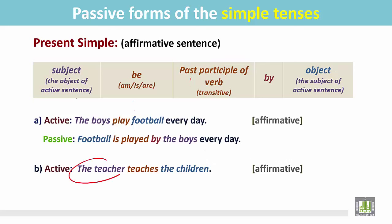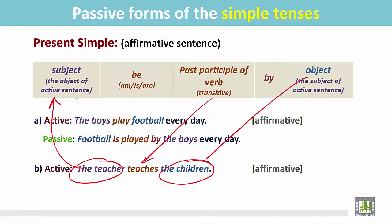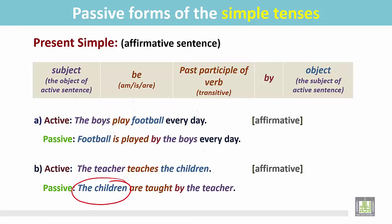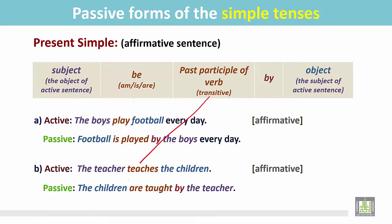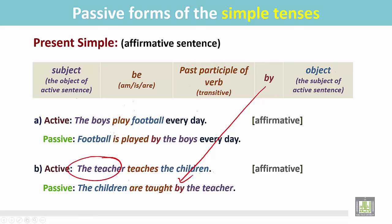Another example: 'The teacher teaches the children.' This is the subject of the active sentence. The transitive verb is 'teaches.' If we ask 'the teacher teaches who?' we find the answer: 'the children.' The children is the object. Now it becomes the subject. 'Children' is a plural noun, so add 'are.' Then the past participle form of 'teach' is 'taught.' Add the preposition 'by' and the subject of the active sentence becomes the object: 'The children are taught by the teacher.'